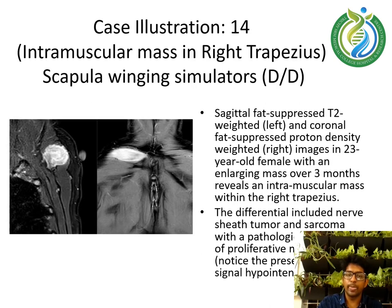Case illustration 14 — Intramuscular mass in the right trapezius. Axial fat-suppressed T2-weighted and coronal fat-suppressed proton density-weighted images in a 23-year-old female with an enlarging mass over 3 months reveal an intramuscular mass within the right trapezius. The differential included nerve sheath tumor and sarcoma, with a pathological diagnosis of proliferative myositis.